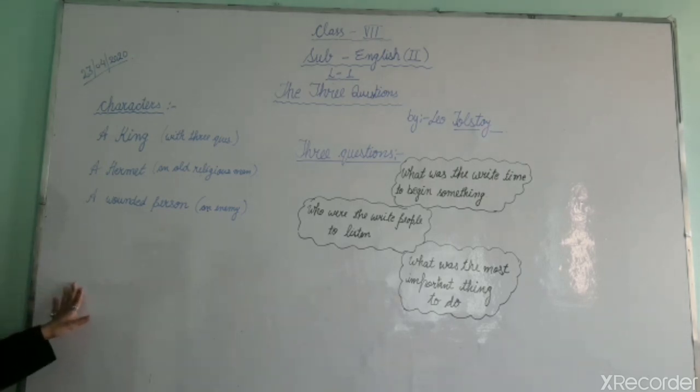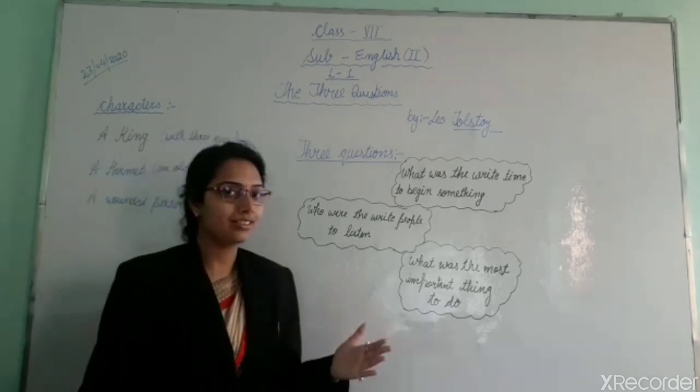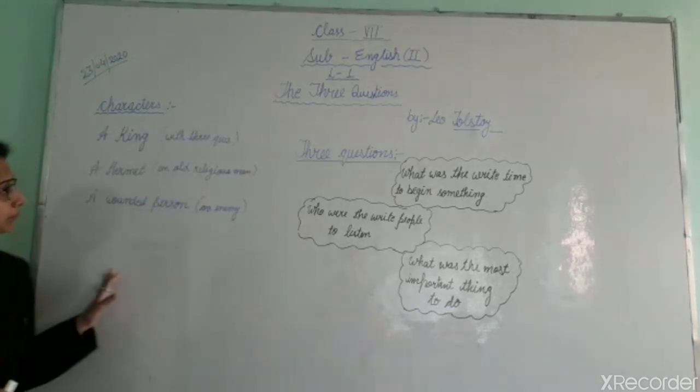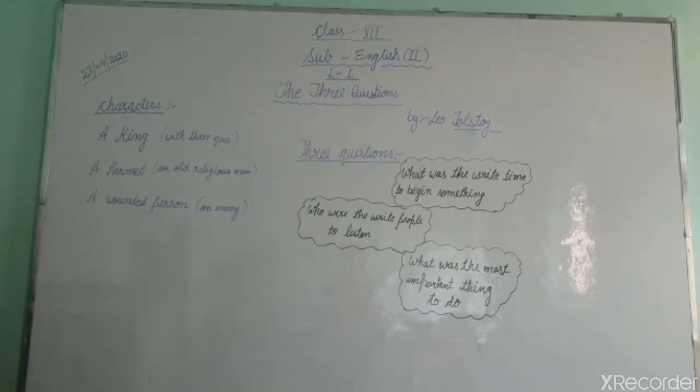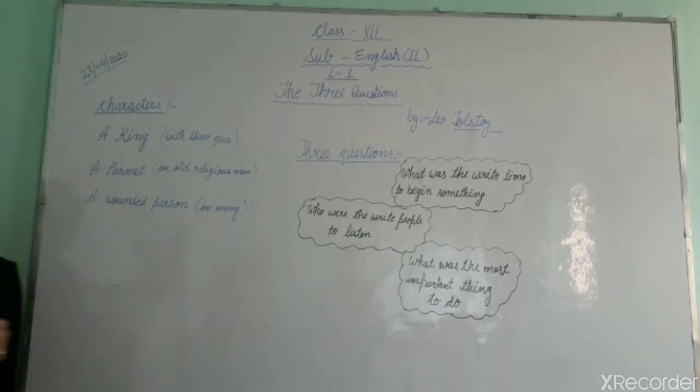What happened later on, the king was not having any option to do, so the king offered to provide some help to the hermit. As the hermit was an old person and unable to dig anymore, the king asked for some help. The hermit gave the spade to the king. Then the king started digging and continued for a long time.